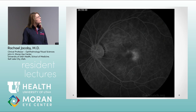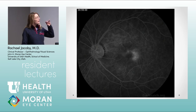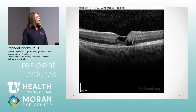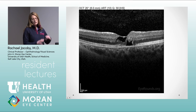OCT changes can be seen at all stages. Autofluorescence shows characteristic changes. On fluorescein angiogram the classic finding is bilateral temporal leakage late. The OCT changes are pretty specific for mactel — you can see cavitations in both the inner and outer retina.